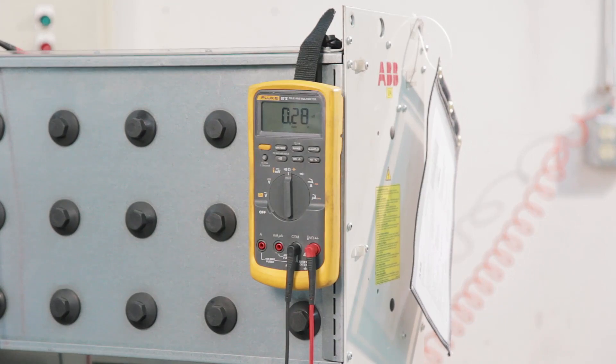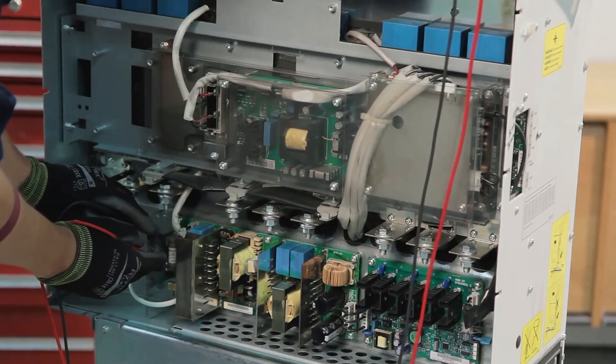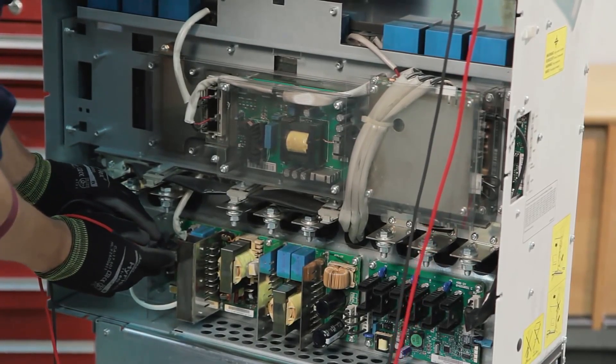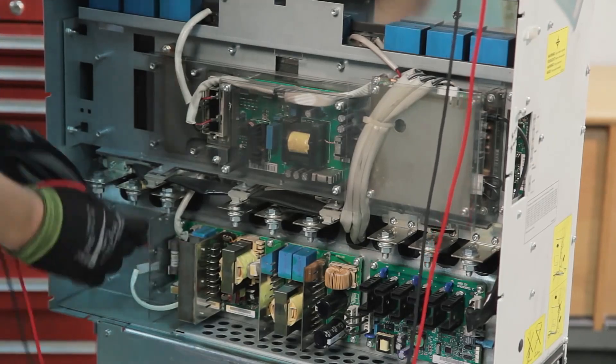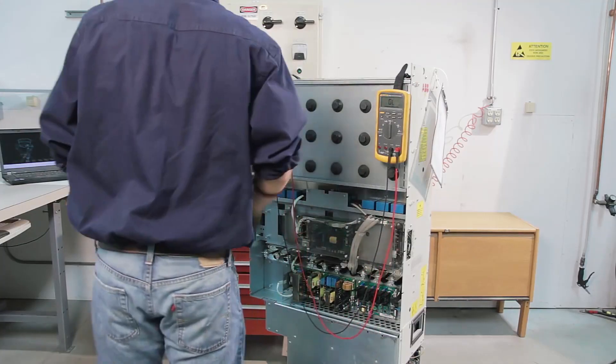To further troubleshoot the cause of the failure, the technician uses a multimeter to perform static checks. The technical inspection concludes with the identification of broken, damaged, or defective components.